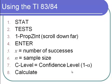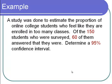Let's look at an example. A study was done to estimate the proportion of online college students who feel they are enrolled in too many classes. Of the 150 students surveyed, 60 answered that they were enrolled in too many classes. We need to determine a 95% confidence interval. Just a disclaimer: I totally made up these numbers, but you can imagine such a study being done. The numbers are nice so you can understand how confidence intervals work.